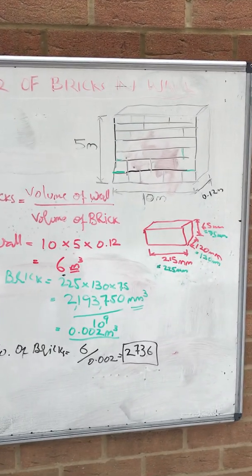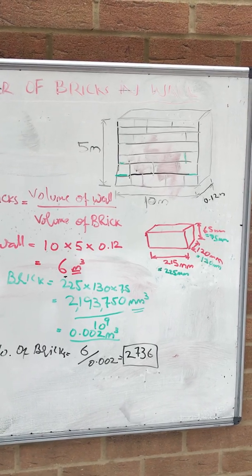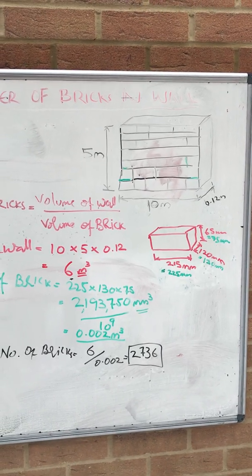So here in this scenario we got the 10 meter long wall, 5 meter height wall by 0.12 meter width, so the thickness of the wall.